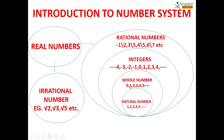The second category is whole numbers. When 0 is included in natural numbers, these numbers become whole numbers. The whole number collection is bigger than natural numbers. Note that 0 is not a natural number. We cannot say every whole number is a natural number, but we can say every natural number is a whole number, because the whole number collection is bigger.